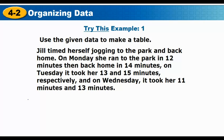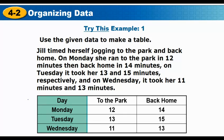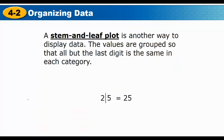Here's a similar example: she timed herself jogging to the park and back home. On Monday she ran to the park in 12 minutes and home in 14 minutes; on Tuesday it took 13 and 15 minutes respectively; on Wednesday it took 11 and 13 minutes. If we put this in a chart with three columns — the day, the time to the park, and the time home — it's much easier to visualize.